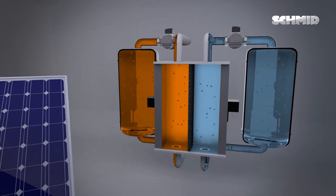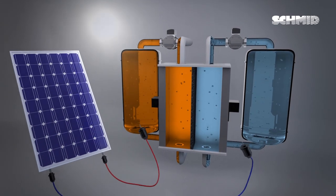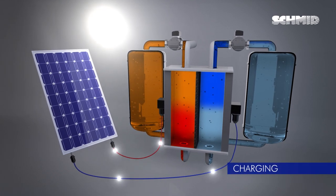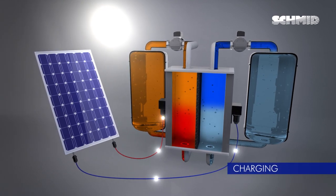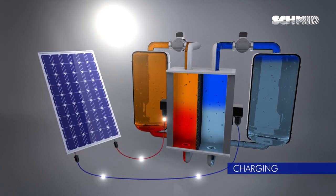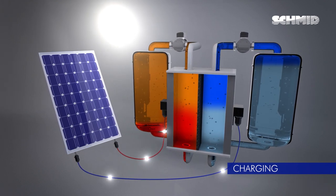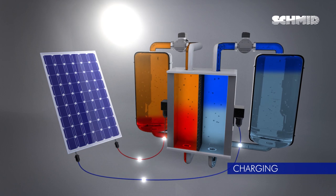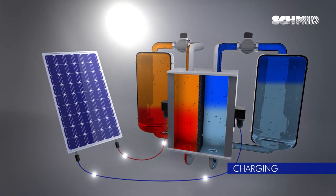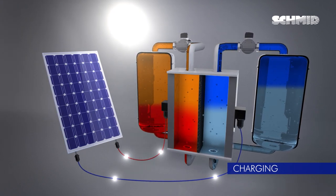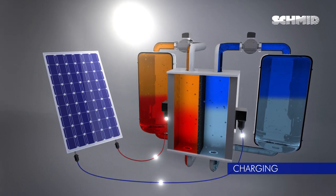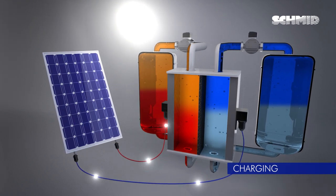An external electrical power source like a PV installation supplies the energy to charge the vanadium redox flow battery. The two vanadium electrolytes are flown through the cell stack in which the electrical energy is converted to chemical energy. The electrolytes charged within the cell are flown back to the tanks, increasing the battery's state of charge.